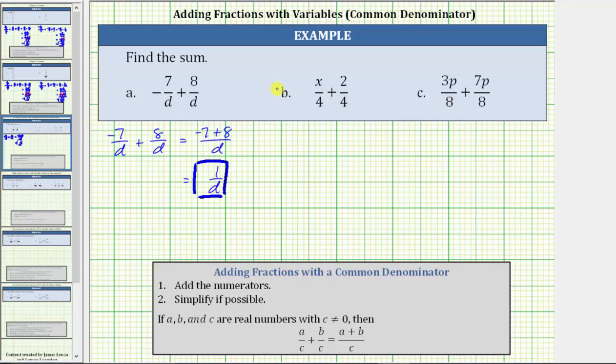For b, we have x over four plus two over four. Again, we already have a common denominator. The denominator in the sum remains the same. And now we add the numerators, which gives us x plus two.